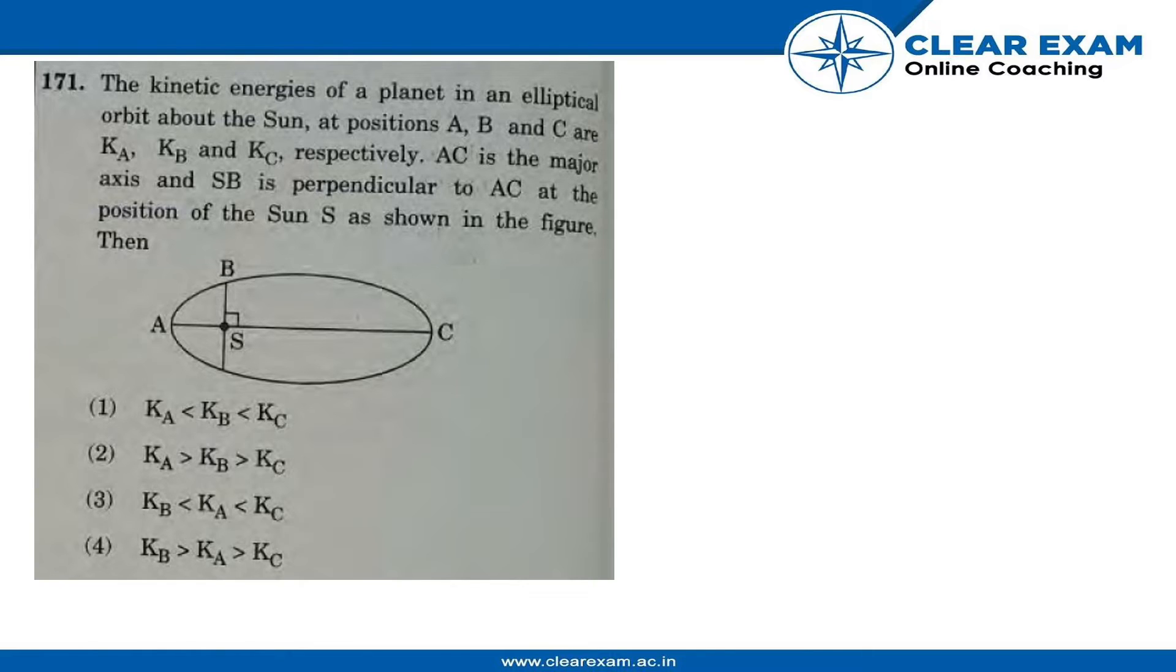The options are: first, KA less than KB less than KC; second, KA greater than KB greater than KC; third, KB less than KA less than KC; and fourth, KB greater than KA greater than KC.